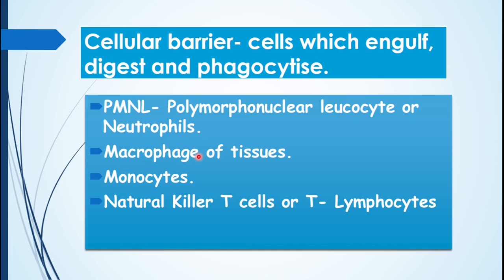The third cellular barrier consists of monocytes, another group of leukocytes or WBCs, which can also engulf and phagocytose microbes. The fourth type is natural killer T cells, also known as T lymphocytes. So we have three types of white blood corpuscles — neutrophils, monocytes, and T lymphocytes — all capable of protecting the body by engulfing and phagocytosing microbes.